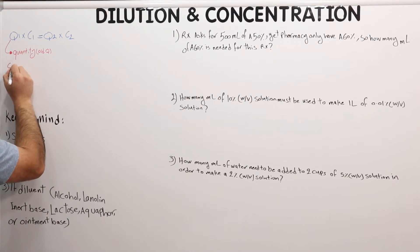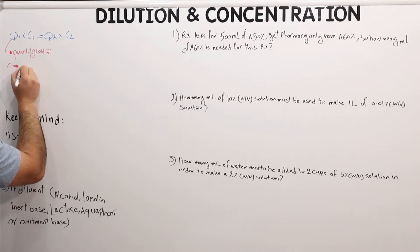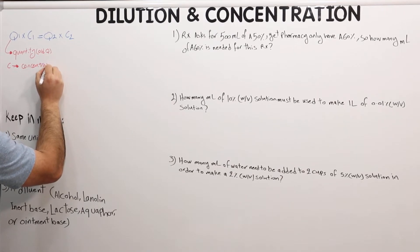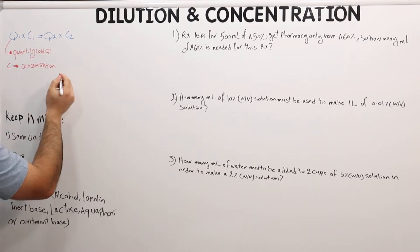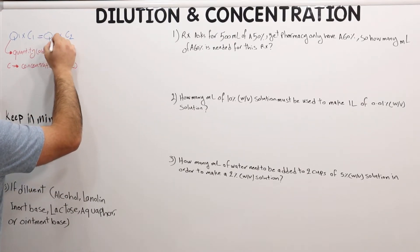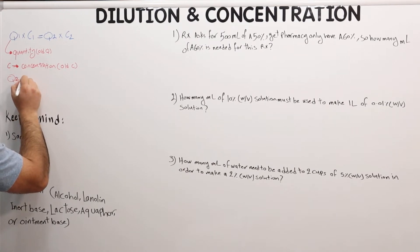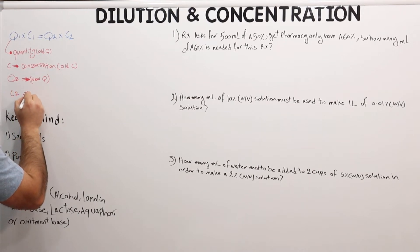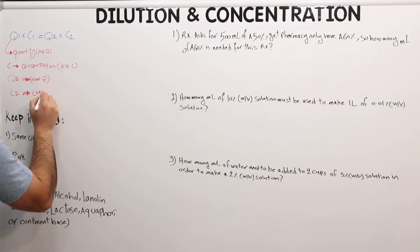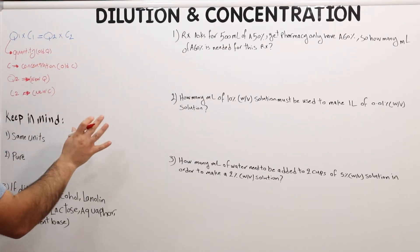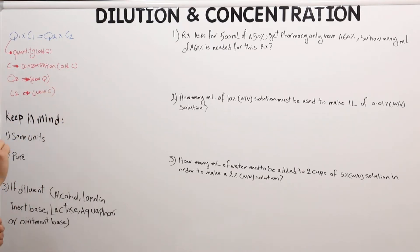C is basically the concentration. C1 is the old concentration, and C2 is the new concentration. A question may give you Q1 and C1, and in the pharmacy you have the quantity and you're looking for the new concentration, or vice versa — they may give you the concentration but the quantity is not enough.